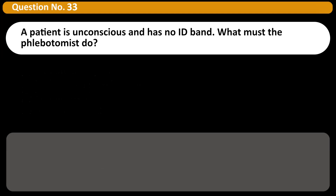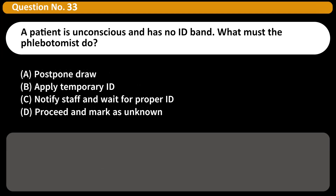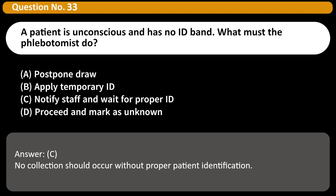A patient is unconscious and has no ID band. What must the phlebotomist do? A. Postpone draw. B. Apply temporary ID. C. Notify staff and wait for proper ID. D. Proceed and mark as unknown. Answer: C. No collection should occur without proper patient identification.